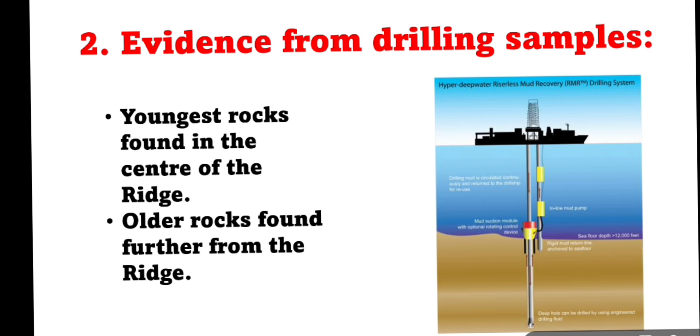The next evidence was evidence from drilling samples. Youngest rocks found in the centre of the ridge, older rocks found further from the ridges. Due to the drilling samples, it is known that at the centre of the ridge, the newly formed rocks are found and farther away, the old rocks are found.